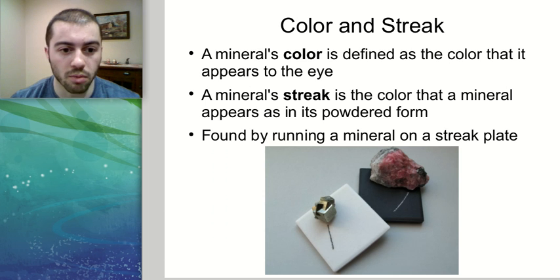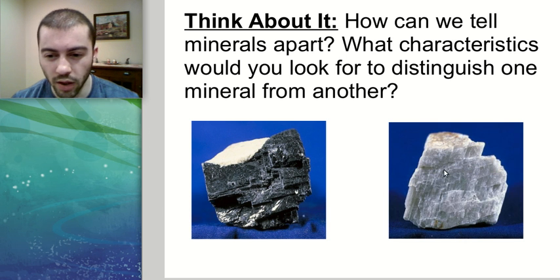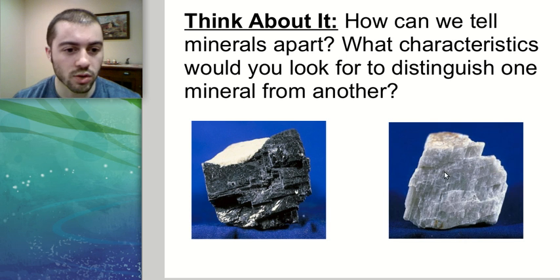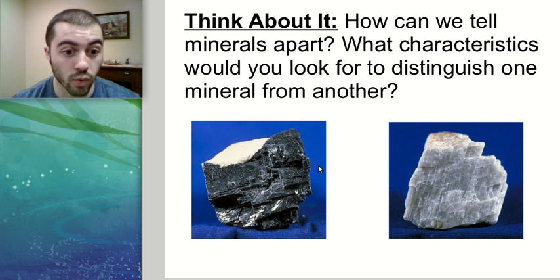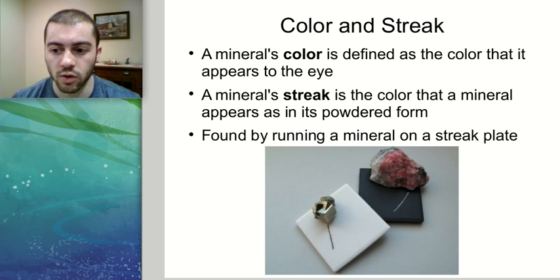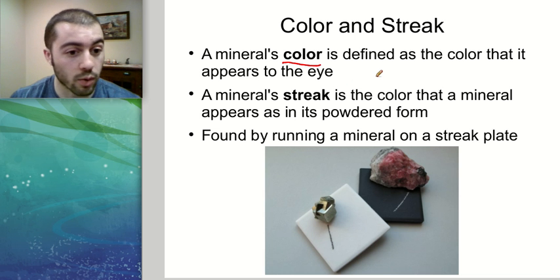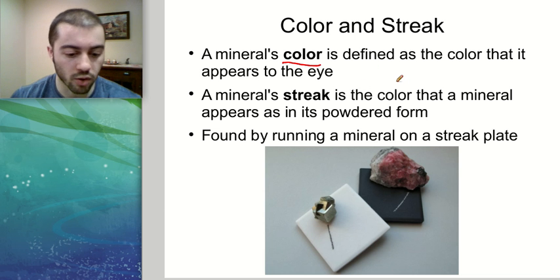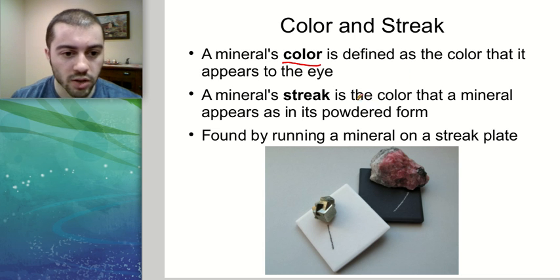The first thing is color. We can notice that one of these minerals looks pretty white or translucent, while the other is a dark gray-black color. We define the color of a mineral as simply what color it looks like when we look at it with our eyes — so if a mineral looks red, its color is red.